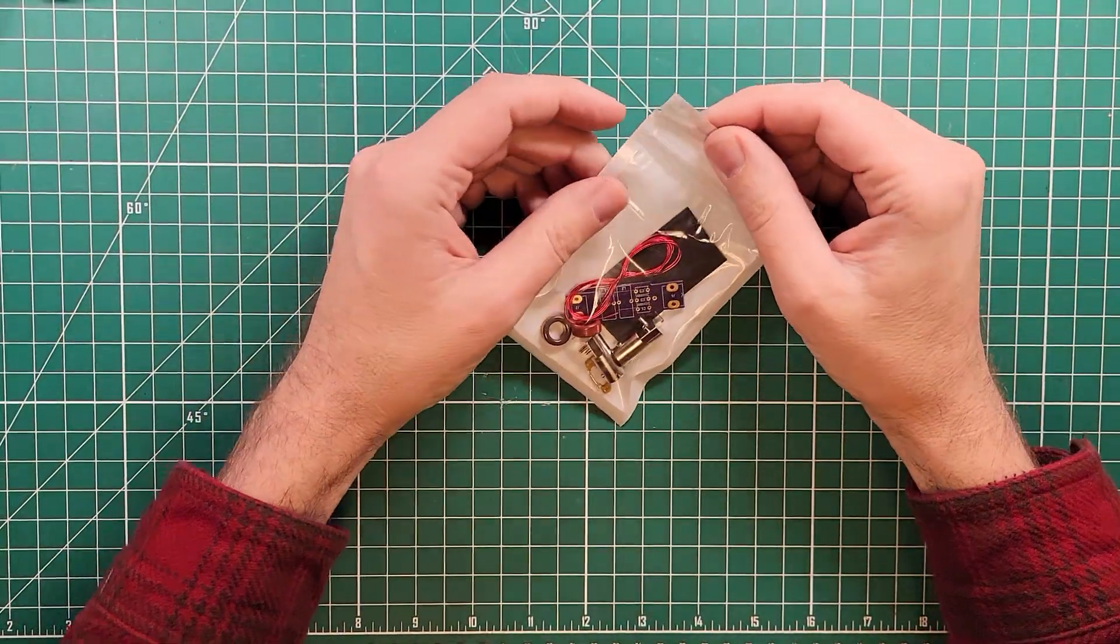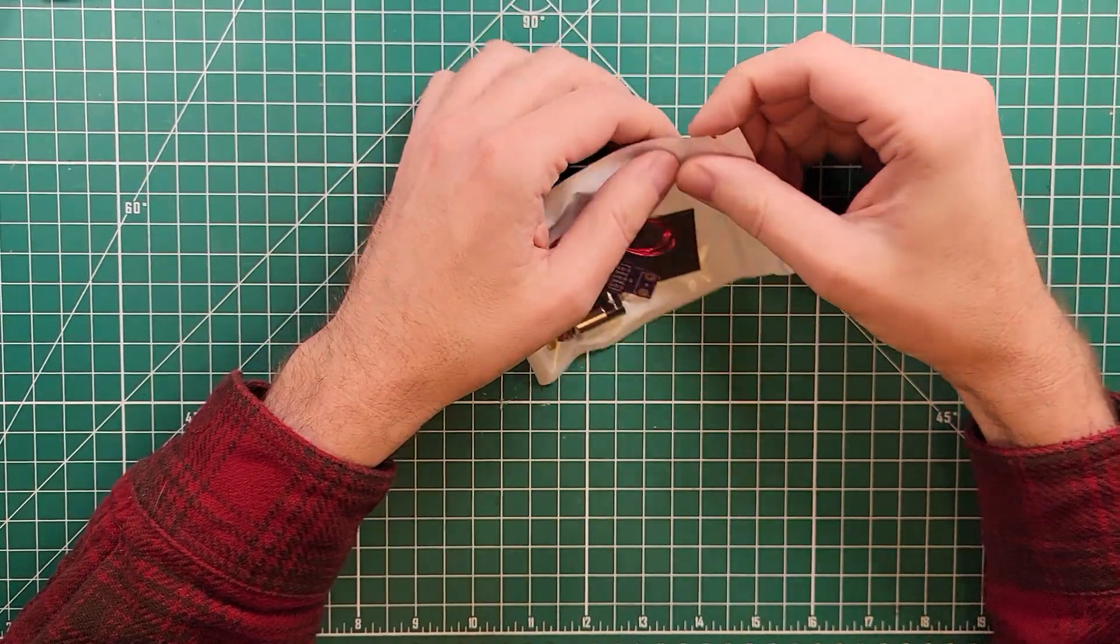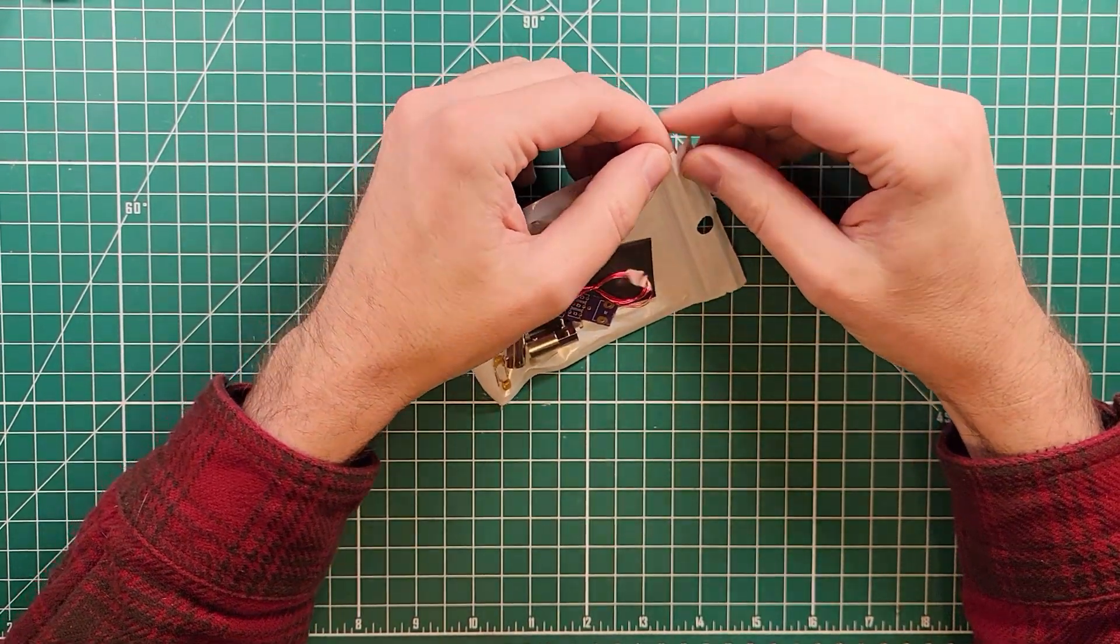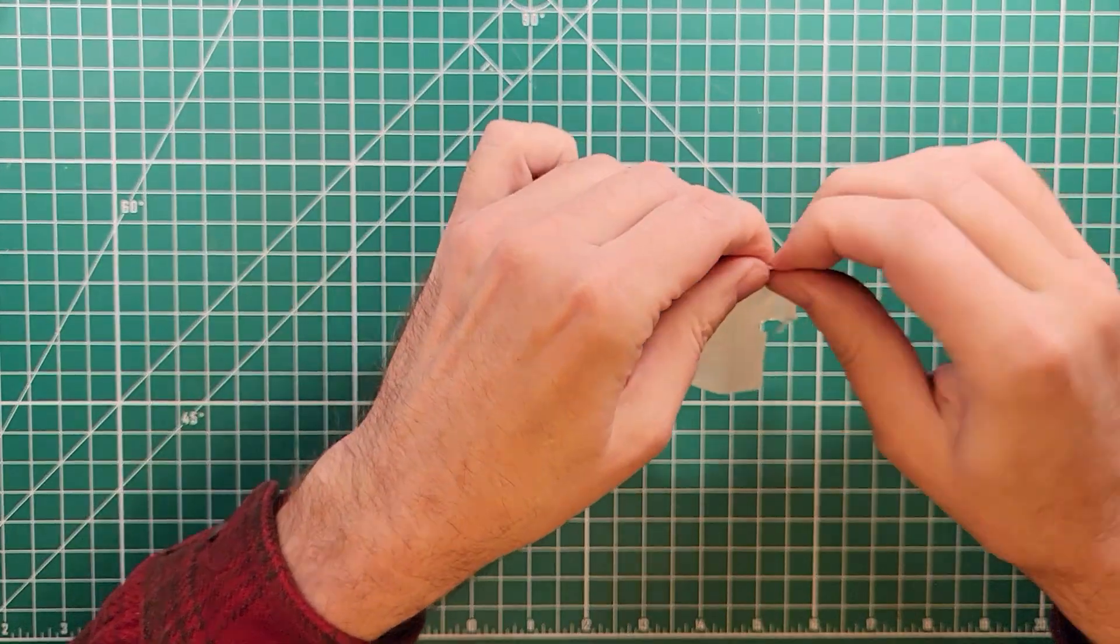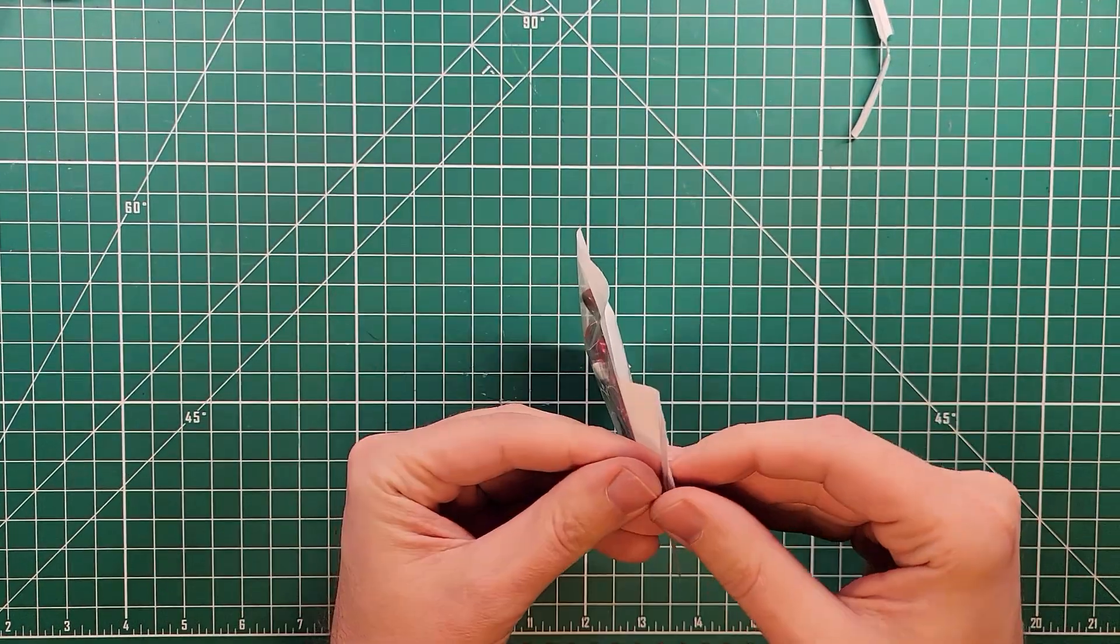This is a broadcast interference filter and it comes to us from Dan, K9DP, Kilo 9 Delta Papa. Let's get this thing open and see what we've got in the bag.